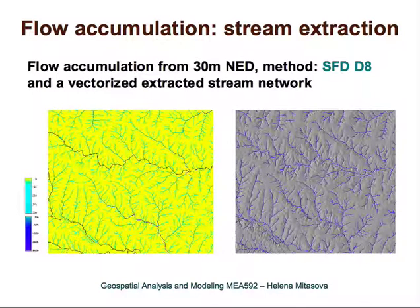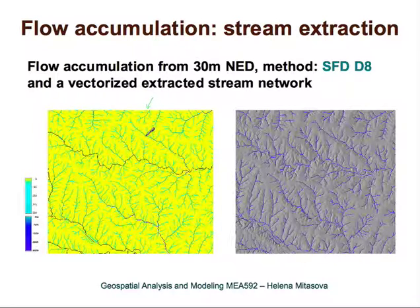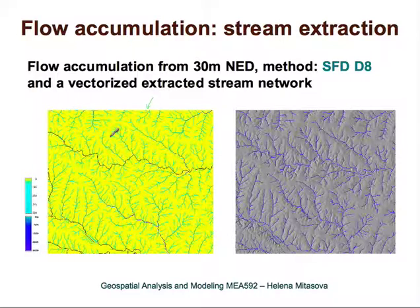This is an example of stream extraction from flow accumulation. This first image shows flow accumulation extracted from a 30-meter digital elevation model using the single flow direction algorithm D8. At this resolution the stream network looks pretty good and we don't see too many artifacts.